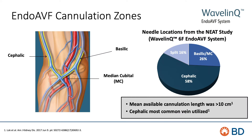In the NEAT study, cannulation zones varied between cephalic, basilic, median cubital, and split flow. The mean available cannulation length was more than 10 centimeters. Appropriate cannulation vessels will vary based on endo-AVF development and patient body habitus. Remember to refer to the cannulation map from the creating physician for guidance on appropriate cannulation zones for each patient.